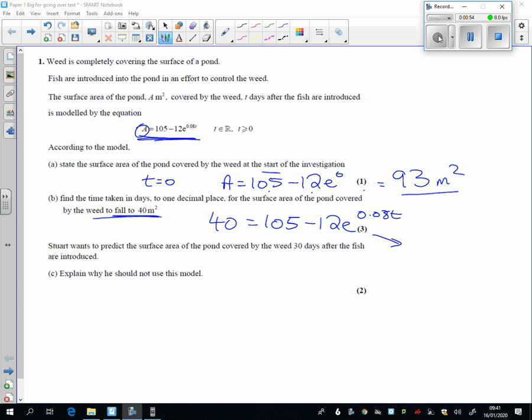So, taking away the 40 and adding the 12, e to the 0.08t to both sides, we're going to get 65 there.